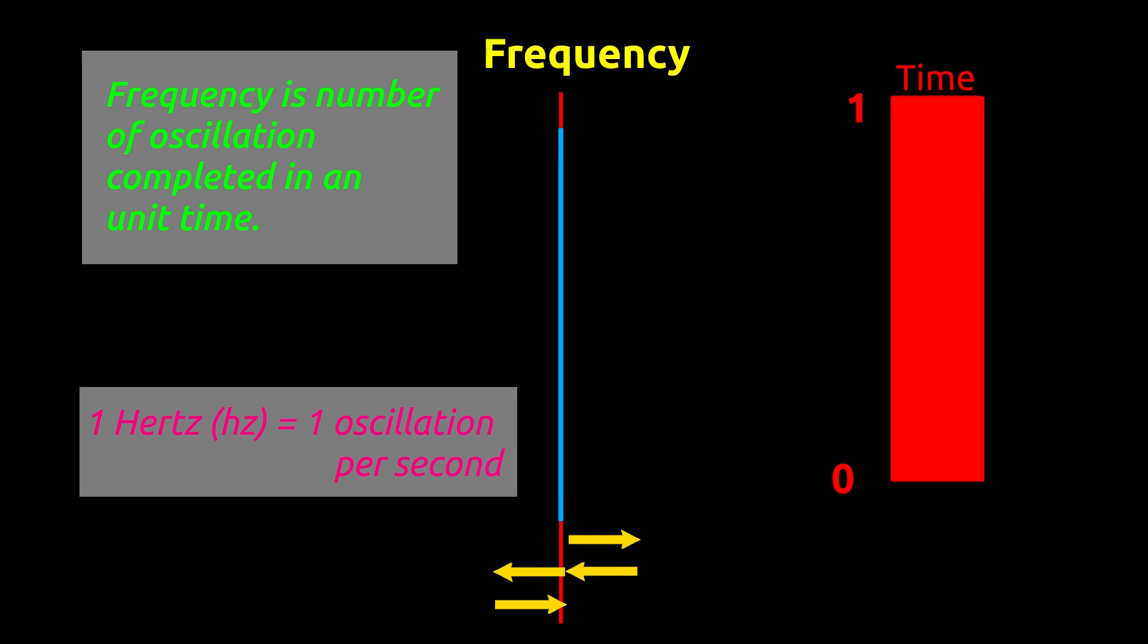For example, if an object is vibrating once in a second, its frequency is one hertz.